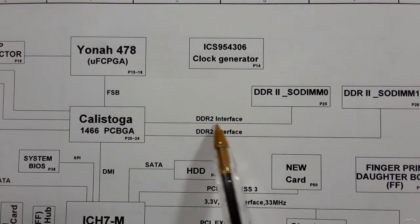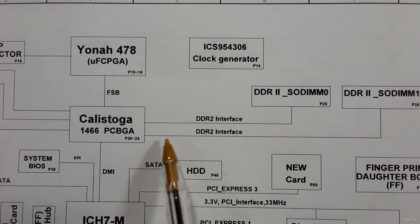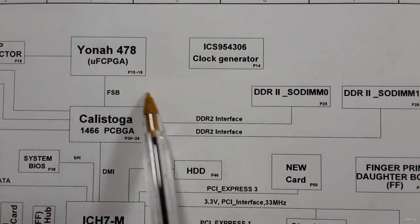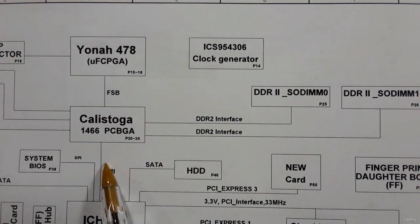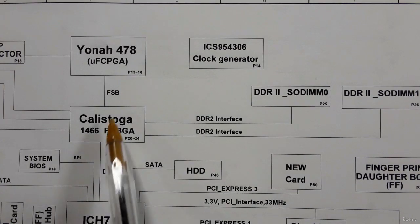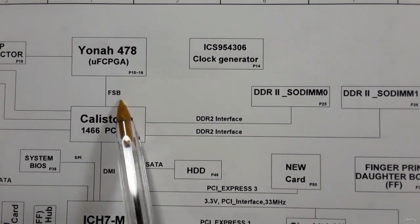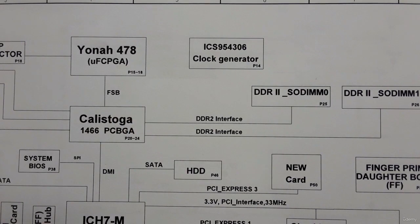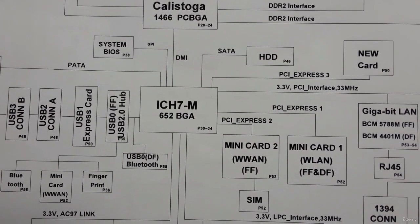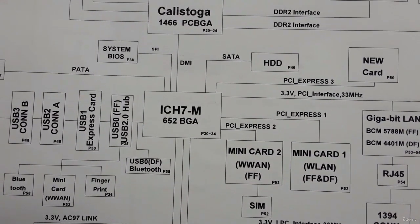So we have three different connections: Front Side Bus (FSB), Direct Media Interface (DMI), and the DDR2 interface. These connections all have different frequencies. The FSB frequency is about one gigahertz or more.